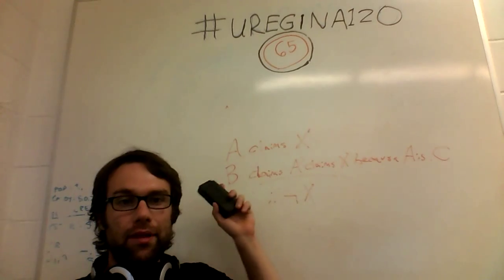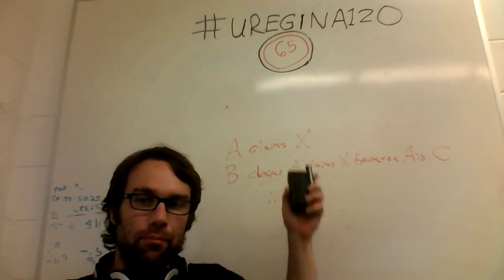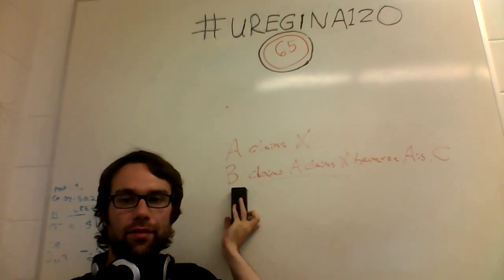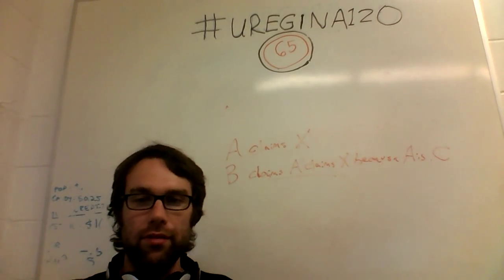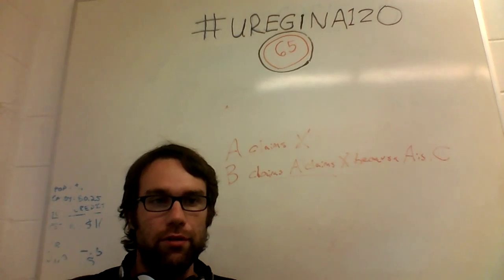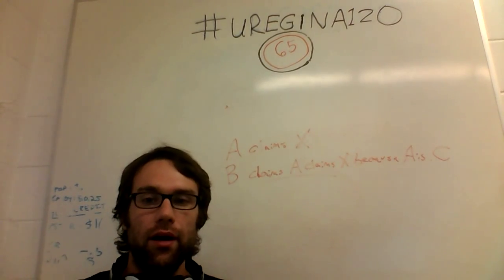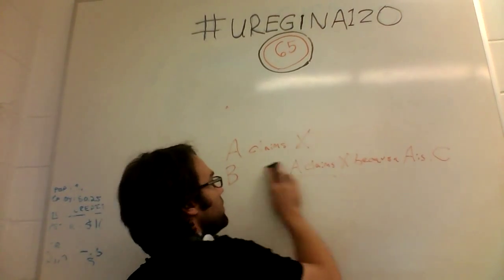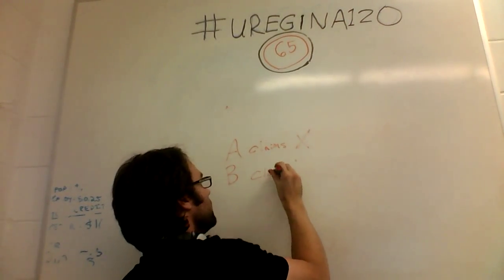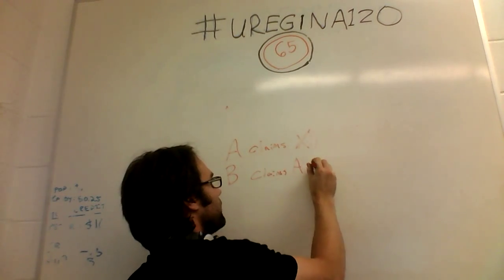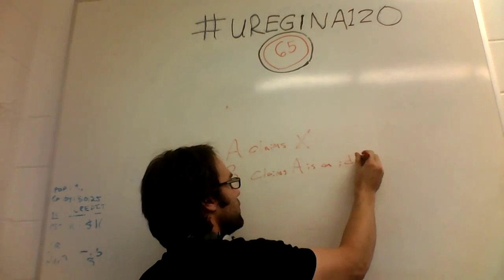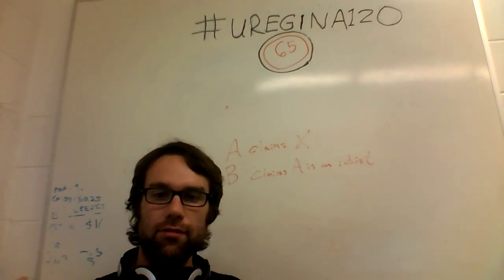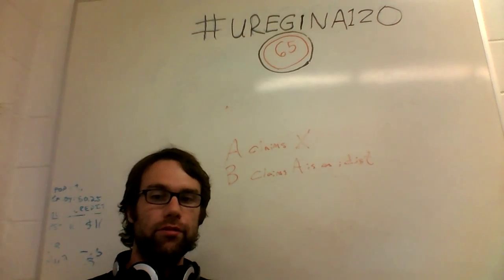In general, most of the time there's this kind of therefore not X. But of course, depending on who you ask, some may not consider it a logical fallacy if you don't include it. But you don't have to include it. You can just have something like A claims X, and then B claims that A is an idiot, and then the assumption is that X is false.